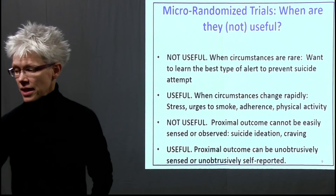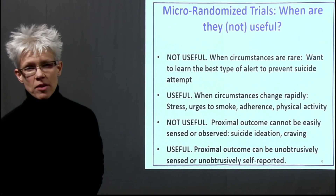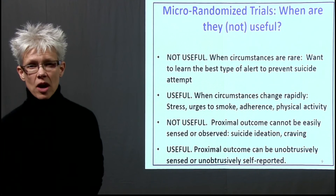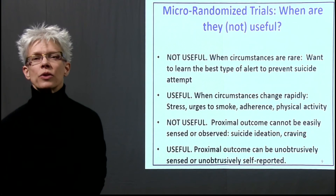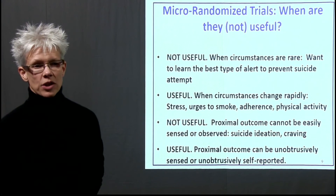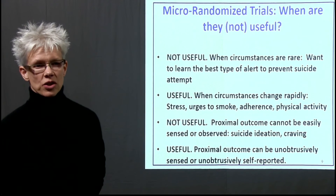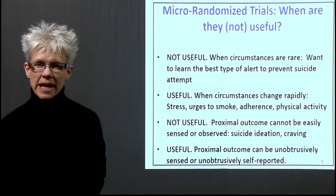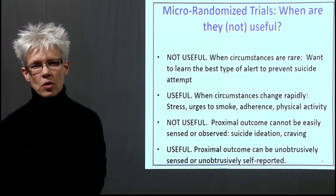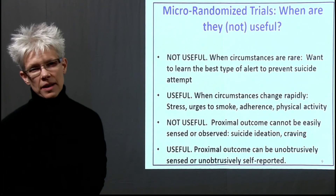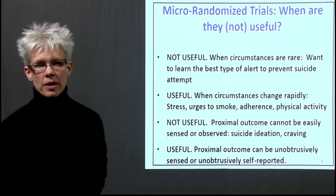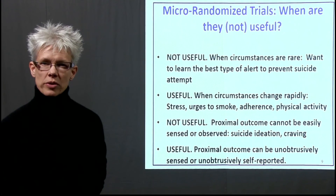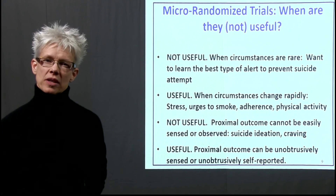Two other areas to consider when deciding whether to use a micro-randomized trial are what you can measure and how unobtrusively you can measure it. For example, can you unobtrusively measure physiological stress, eating habits, or food intake? As sensors develop and become increasingly sophisticated, we'll be able to examine more and more types of behaviors, because sensors will allow us to unobtrusively collect information on eating behavior and so on.